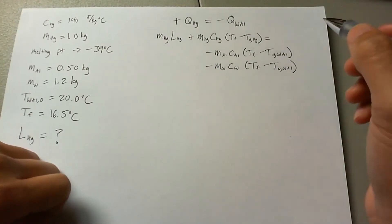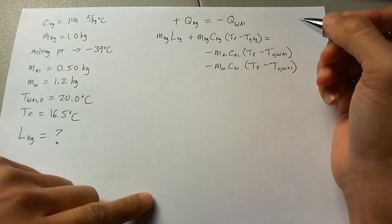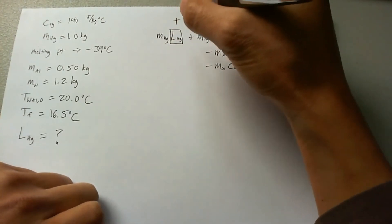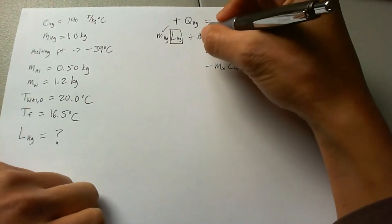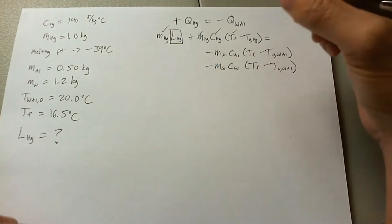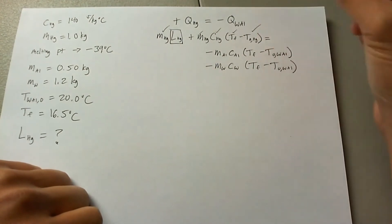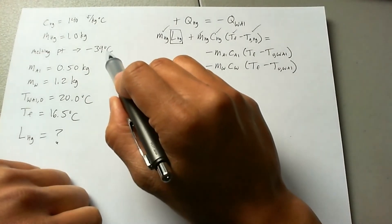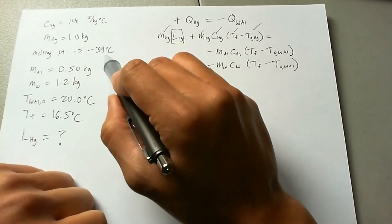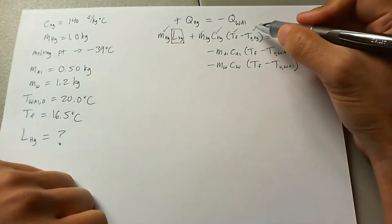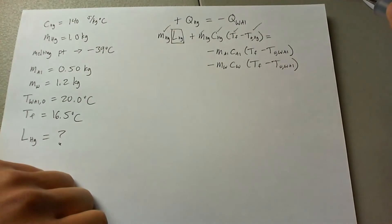Let's make sure that we have all that we need in order to find L of mercury. Looks like we have the mass of mercury. The heat capacity of mercury is given in the problem. Final temperature is given in the problem. The initial temperature is given in the problem that actually ends up being the melting point of mercury because that is the point in which solid mercury was transferred to the calorimeter. So in a sneaky way, they gave us the initial temperature of mercury.